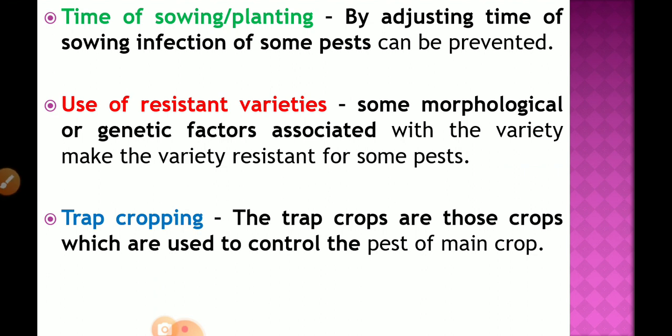The next practice is adjusting the time of sowing or planting. Some pest infestations can be prevented by adjusting the sowing time. For example, if the egg-laying period of the shoot fly is in a particular month, we can change the sowing time so that the shoot fly never lays eggs in that field, because the host plant is absent during that period.